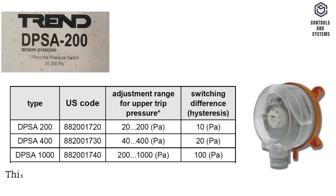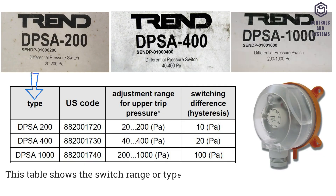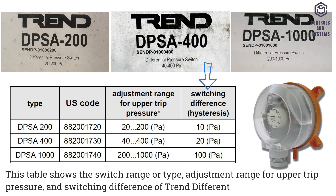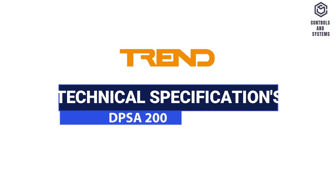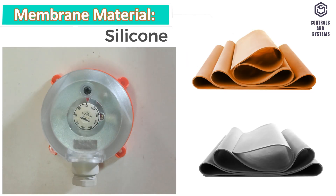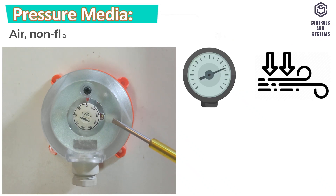This table shows the switch range or type, adjustment range for upper trip pressure, and switching difference of Trend differential pressure switches.